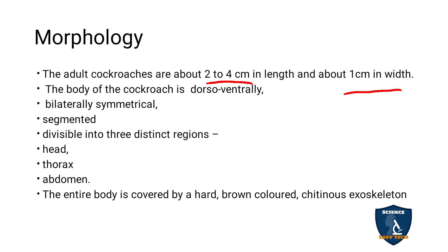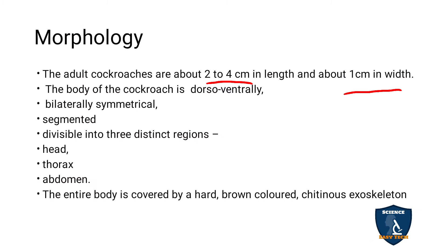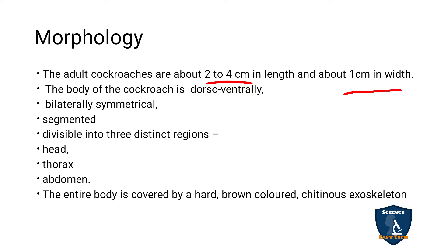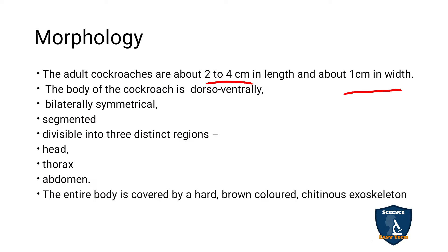The cockroach has bilateral symmetry — it can be cut at only one plane to give two equal halves. The body is segmented and divisible into three regions: head, thorax, and abdomen. The entire body colour of cockroach is brown.